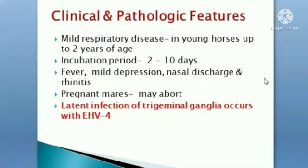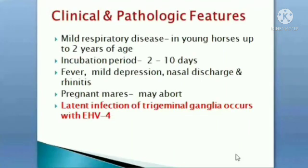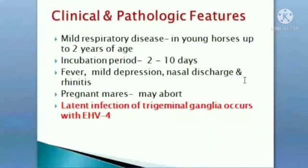Pregnant mares may abort, and latent infection of the trigeminal ganglia occurs with Equine Herpes Virus 4. The nerves are involved — specifically, the trigeminal ganglia is infected in the case of Equine Herpes Virus 4 infection.